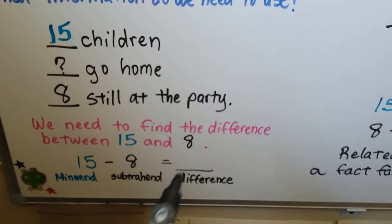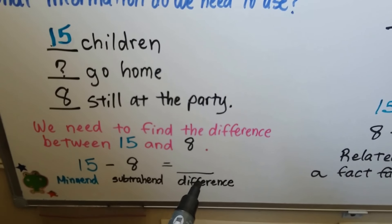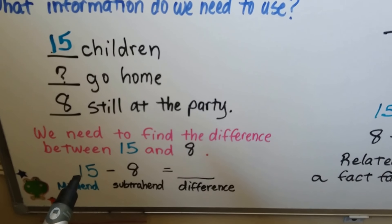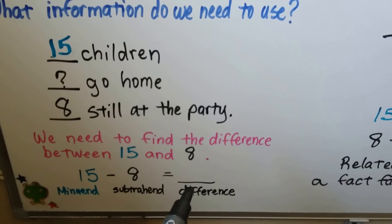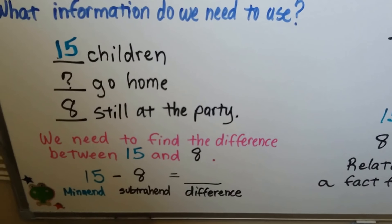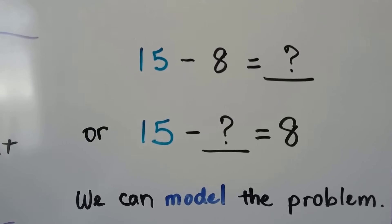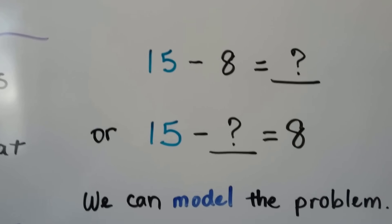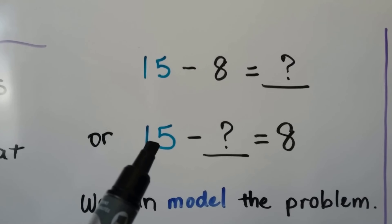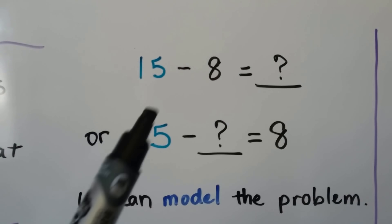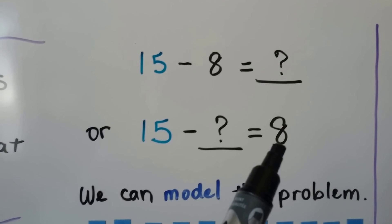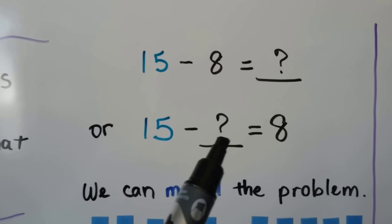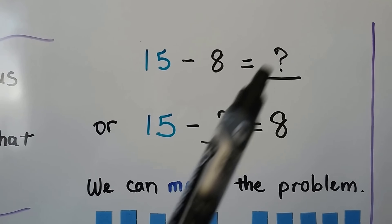If you remember, the difference is the answer in a subtraction problem. The 15 would be the minuend, the 8 would be the subtrahend, and we need to find the difference. We could also say that there were 15 children at the party, some went home, and it equals 8 left over. So we need to find this number — it would be the same as the difference.